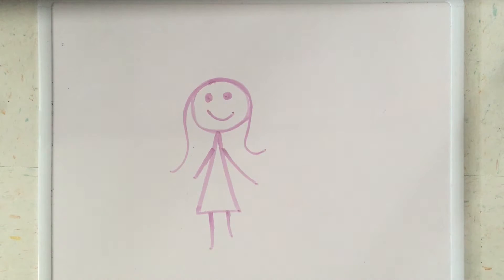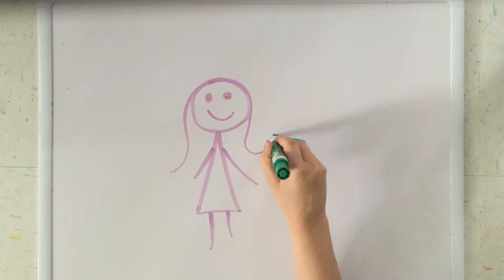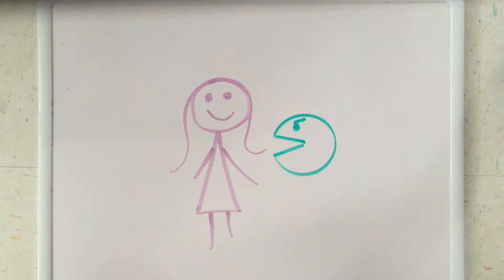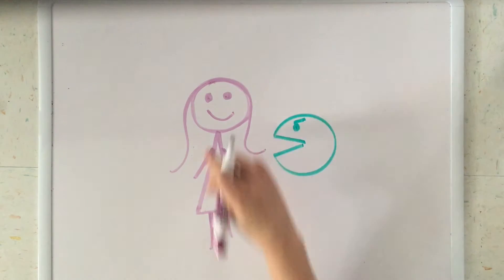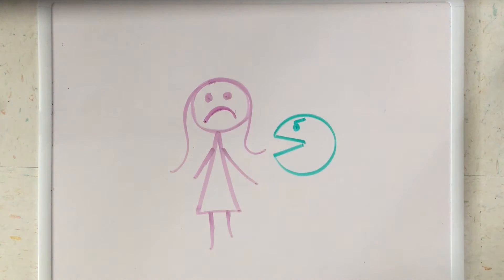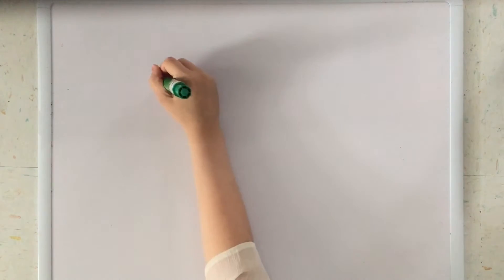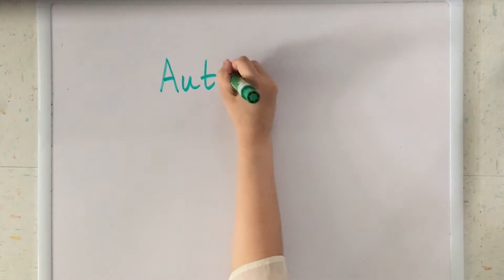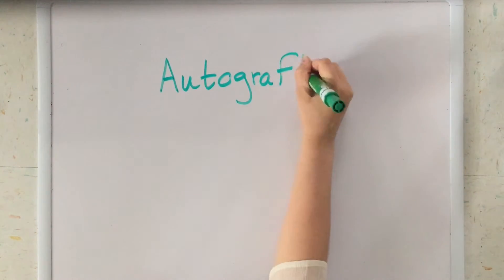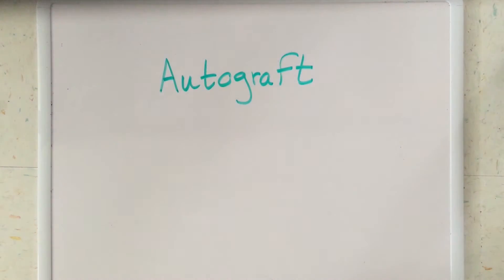Organ transplant rejection is a process in which a transplant recipient's immune system attacks the transplanted organ or tissue. There are four types of transplants, which are often referred to as grafts.